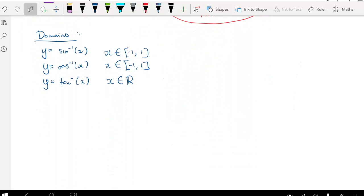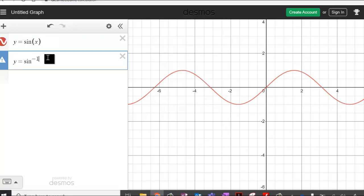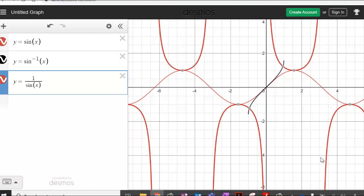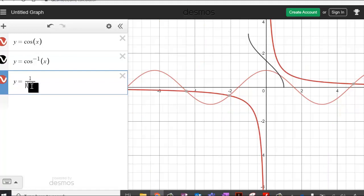Make sure you understand they're different from those reciprocal functions. If you want to see that, if we put in sin x and arc sine of x, along with y equals 1 over sin x, you can see they're all distinct functions. Even though there's relationships between them, they're not the same thing. If we change these all to cosine, arc cosine, and 1 over cosine, again, you can see they're all distinct and individual functions.